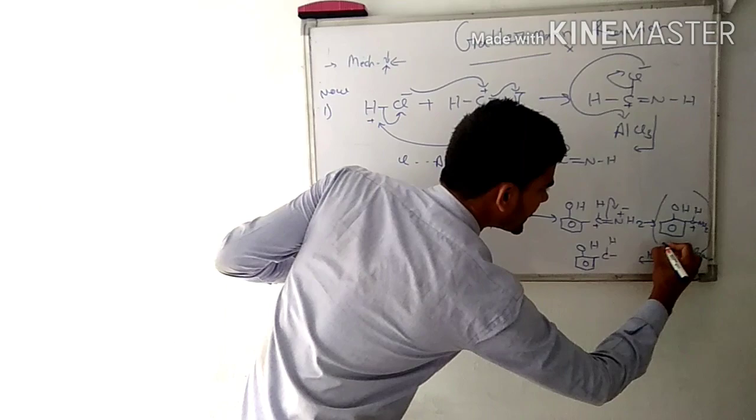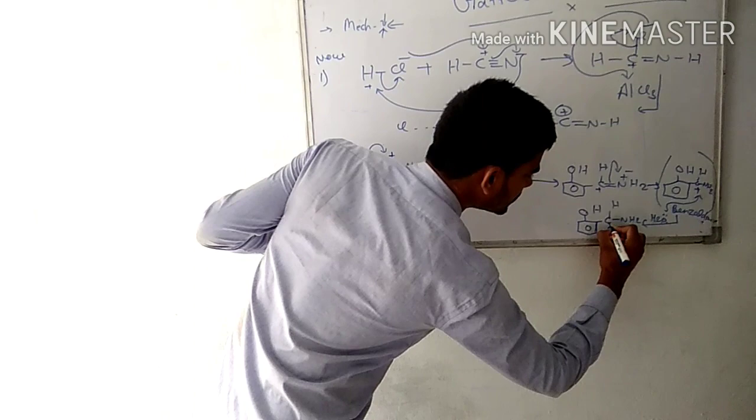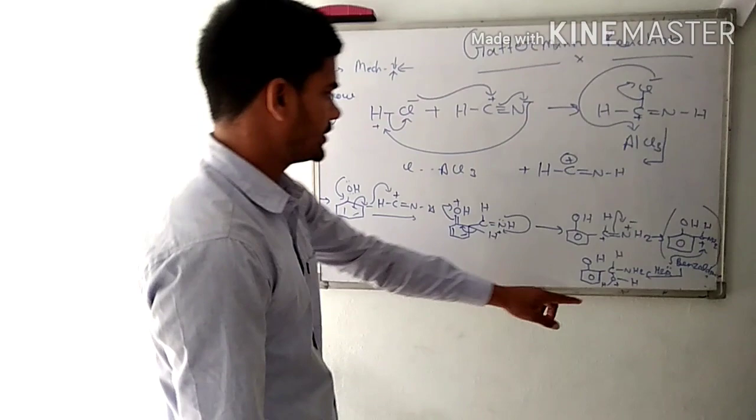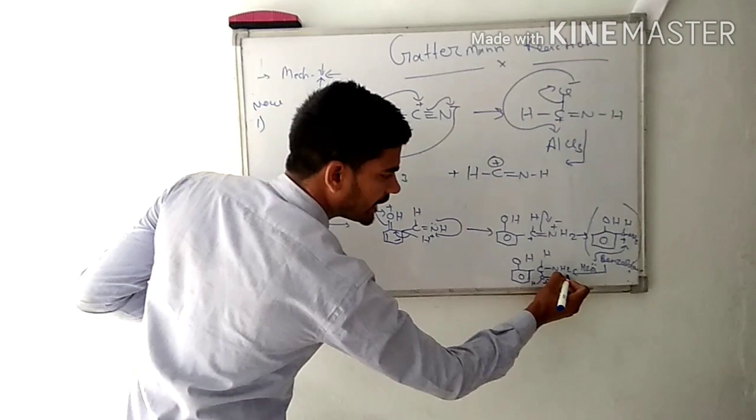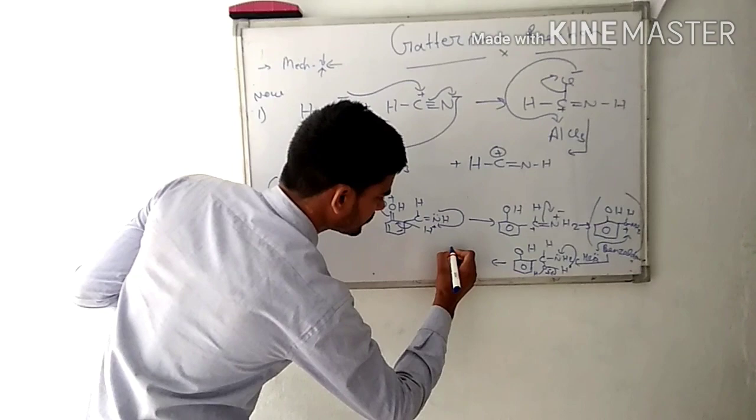The lone pair of electrons of the oxygen atom attacks this carbon, and the positive charge transfers to the oxygen atom. To neutralize this oxygen, we break this hydrogen bond. This proton is also attacked by the lone pair of electrons of the nitrogen atom.